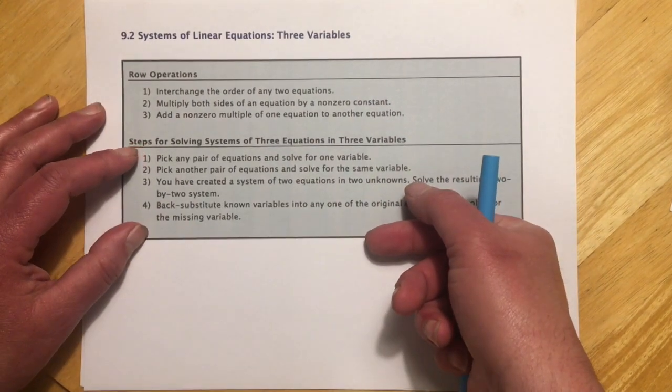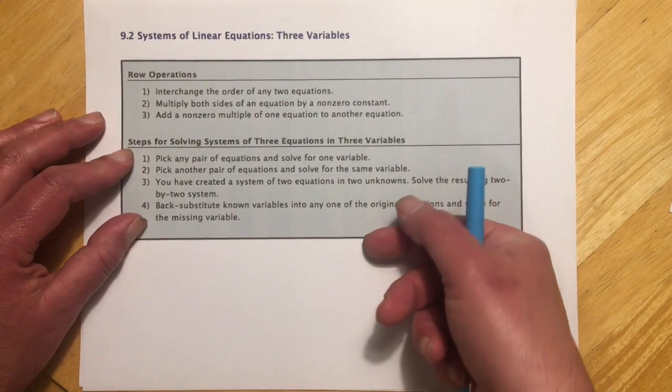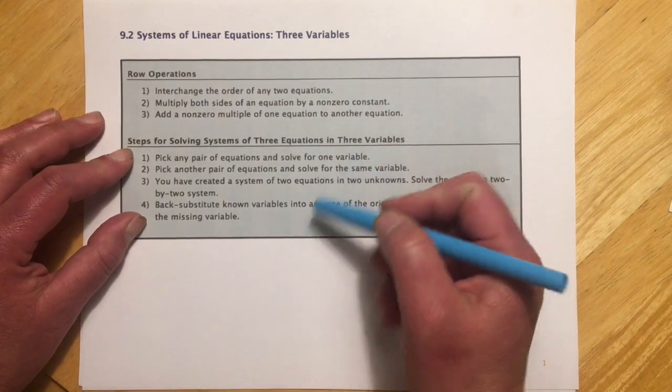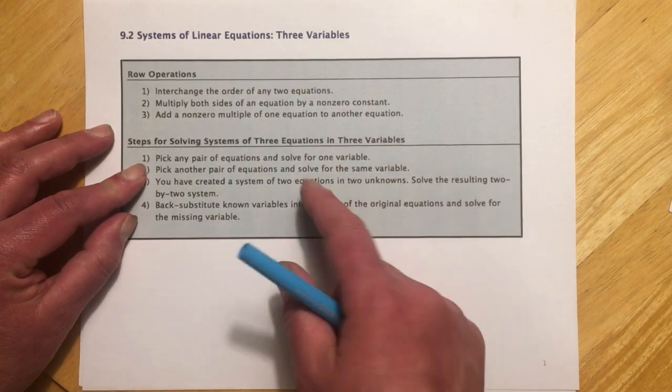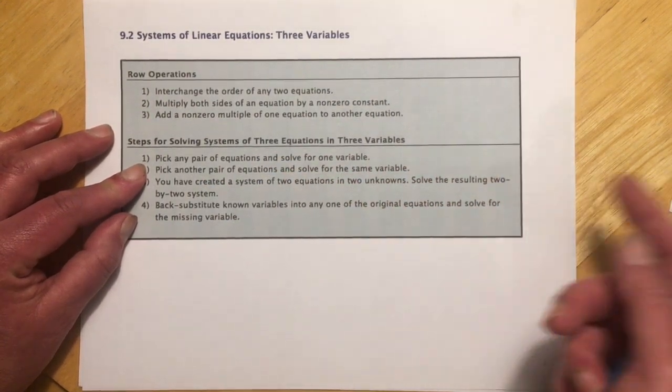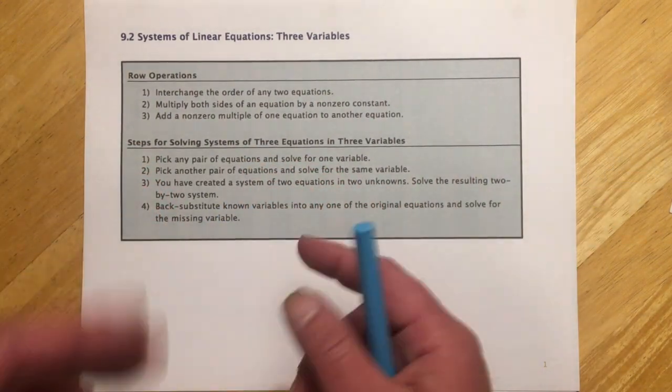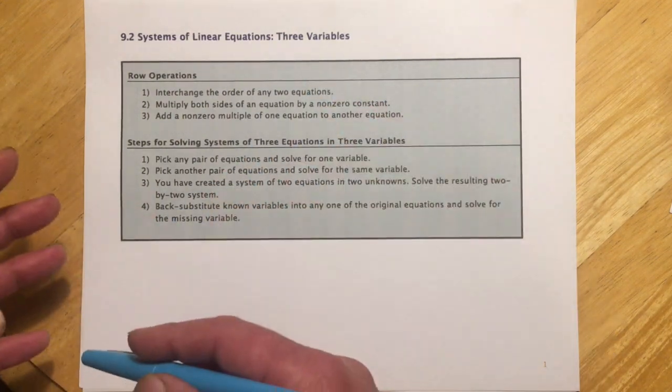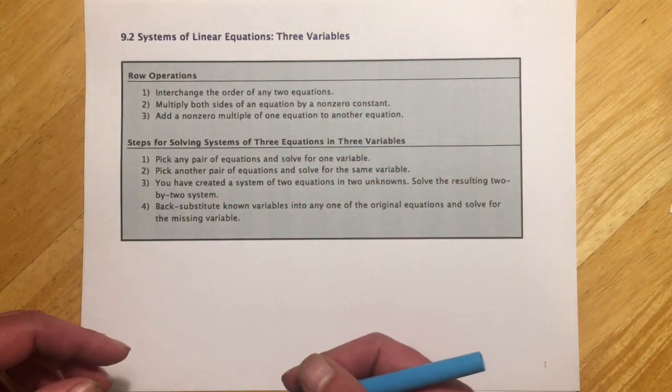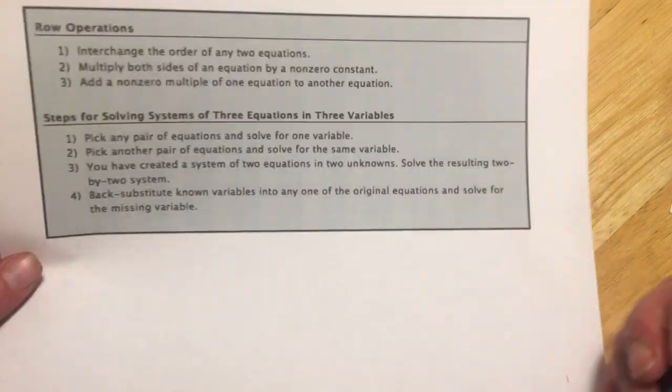So our steps for solving these is to pick any pair of equations and eliminate one variable. Pick another pair of equations, a different pair, but then eliminate the same variable. And then after that you'll have two equations, two unknowns, which goes back to that 94 where we eliminate one more variable, get an answer, and then we back solve our way through. And that was step four. So let me show you what all that looks like with an example.